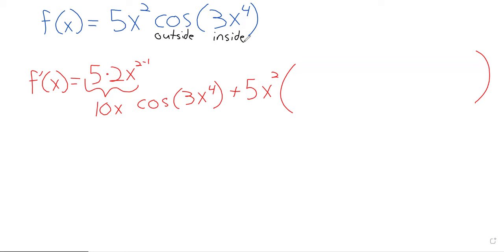Because we've got an outside and an inside function here. So the derivative of the cosine is the negative sine. We put the inside function inside of it. And then we multiply by the derivative of the inside function.